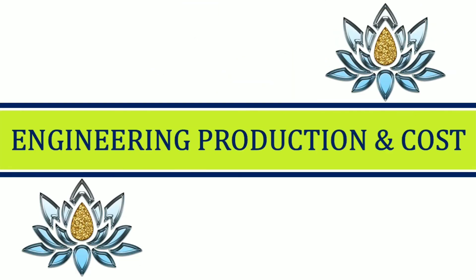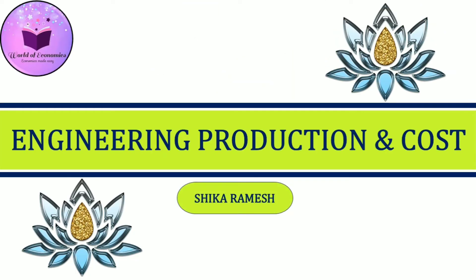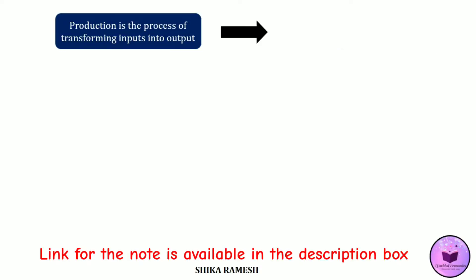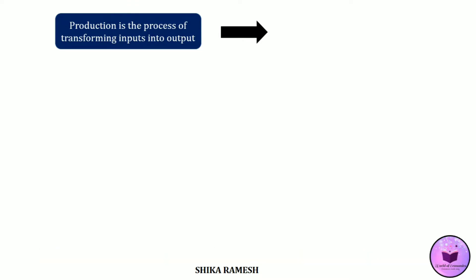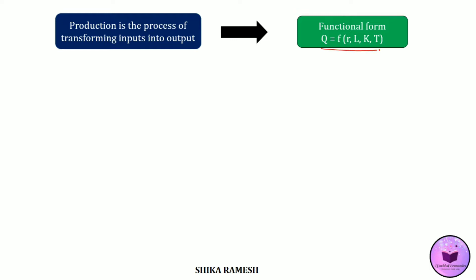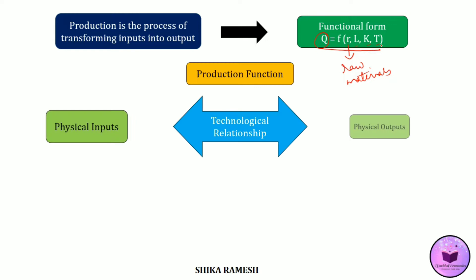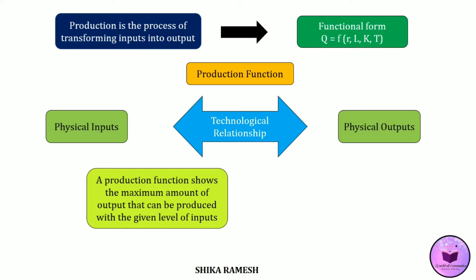Hello friends. In today's video we shall go through the concept of engineering production function and engineering cost. Production is the process of transforming or converting inputs into output, and when this process is represented in a functional format we get a production function. For instance, a production function Q = f(R, L, K, T) shows that the total output produced is a function of the amount of raw materials, the number of laborers and capital used, as well as the available technology. So basically a production function shows the maximum amount of output that can be produced with a given level of inputs.